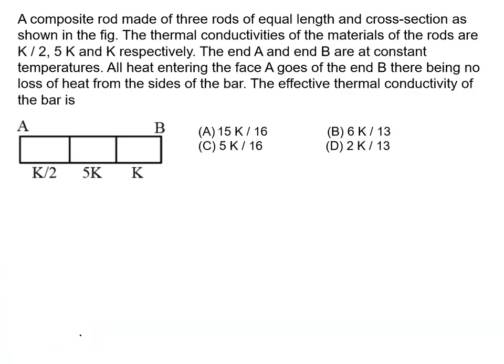In this problem there is a composite rod made of three rods of equal length and cross-section area. The thermal conductivities of the materials of the rods are K/2, 5K, and K respectively. The ends A and B are at constant temperatures.